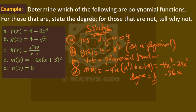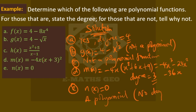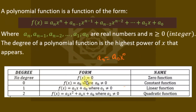The last one is also a polynomial. If it's a constant that is not zero, it has degree zero. But since the value here is zero, we have no degree — it is the zero function with no degree, as shown in the table.